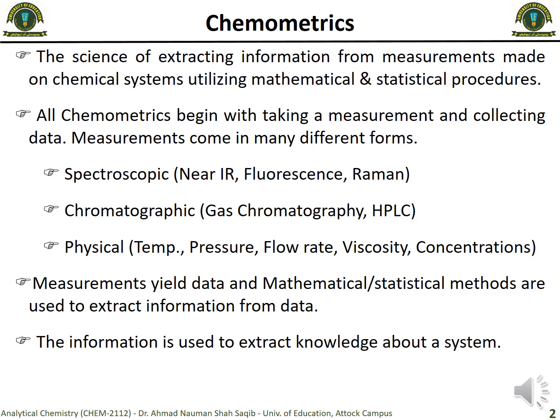Let me first define chemometrics. The first question is: what is chemometrics? It is actually a branch of analytical chemistry which is used to extract information from different analytical measurements made on various chemical systems by using certain mathematical or statistical models or procedures.